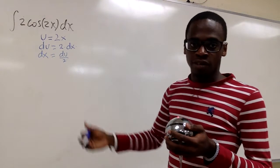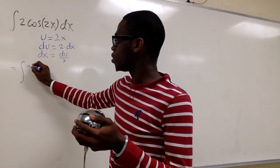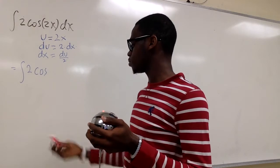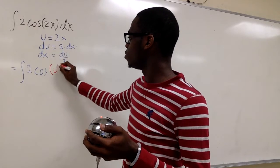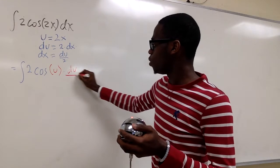So now we want to replace everything. So we have the integral of 2 cosine u, and dx will be du over 2.